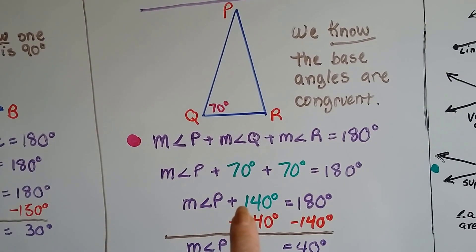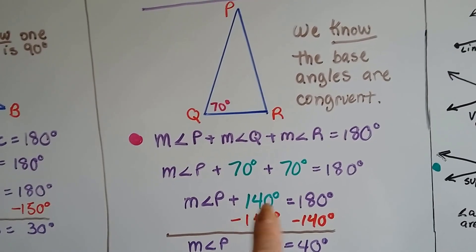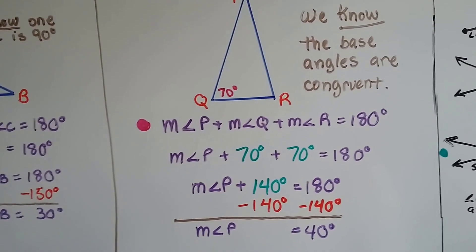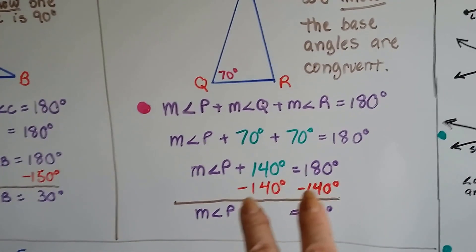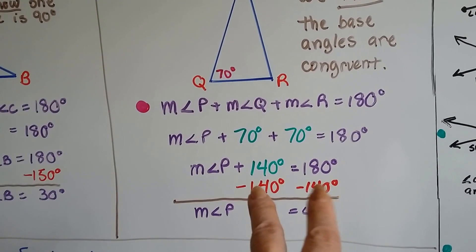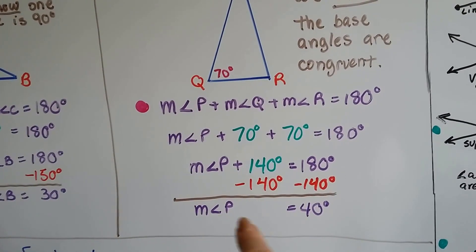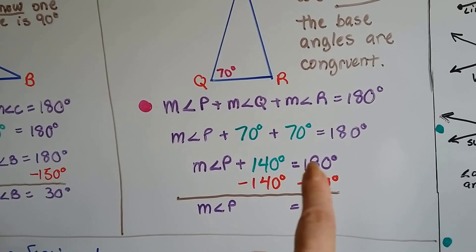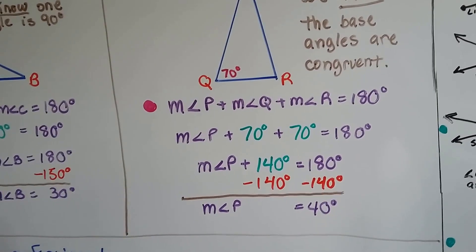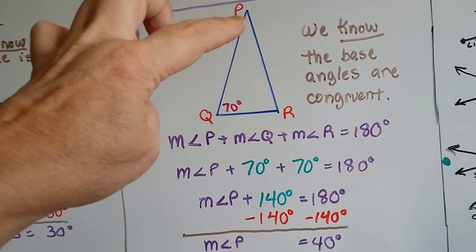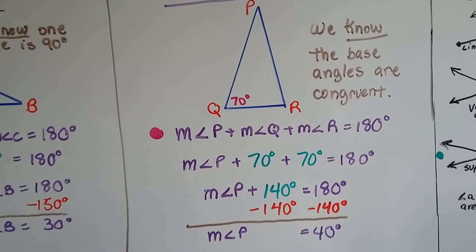So the measure of angle P plus the 140 degrees is 180 degrees, and we subtract the 140 degrees from each side, make this a zero pair, and it'll isolate the measure of angle P to one side. 180 minus 140 is 40, so we know that the measure of angle P is 40 degrees.